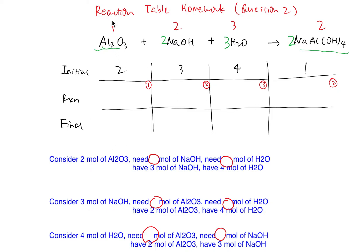A perfect reaction needs one piece of aluminium oxide, two pieces of sodium hydroxide, and three pieces of water. So if we have two moles of aluminium oxide, we will need four moles of sodium hydroxide and six moles of water. You can see 2, 4, 6 follows the 1 to 2 to 3 ratio.